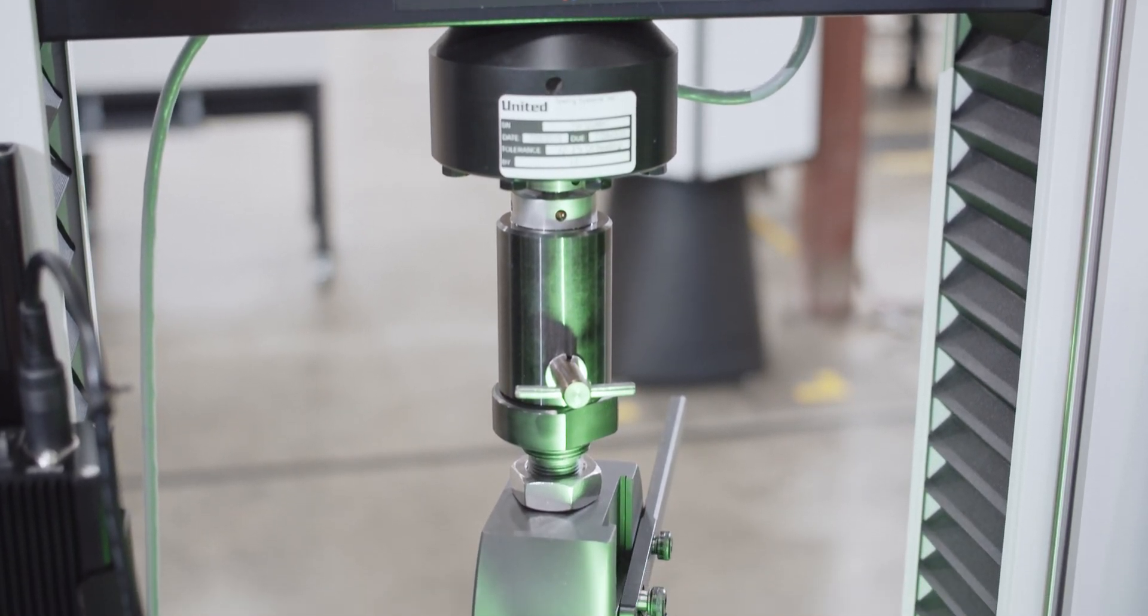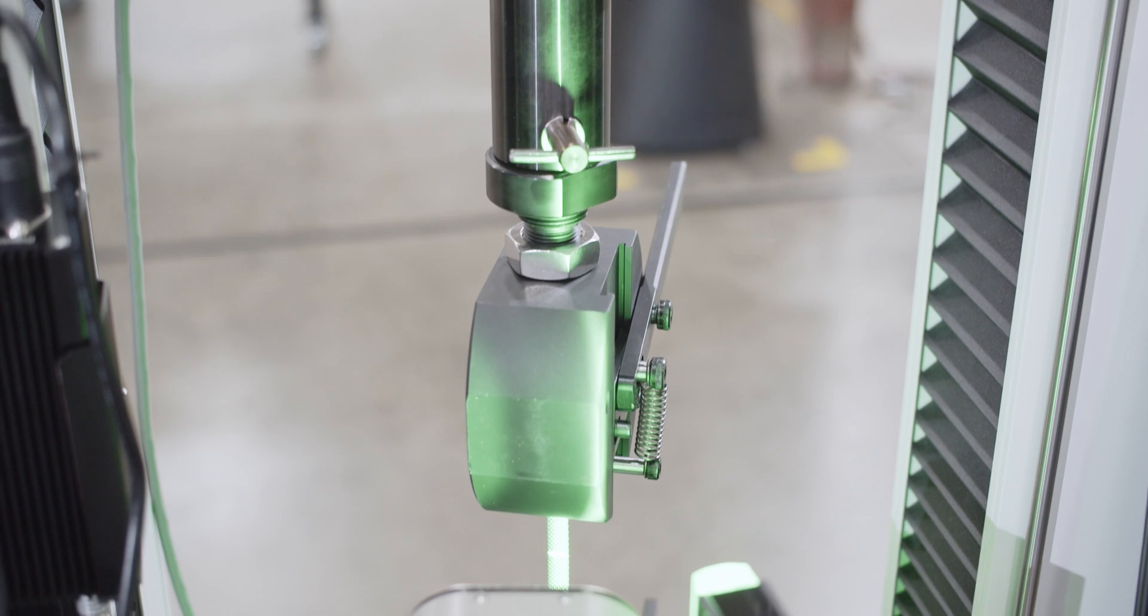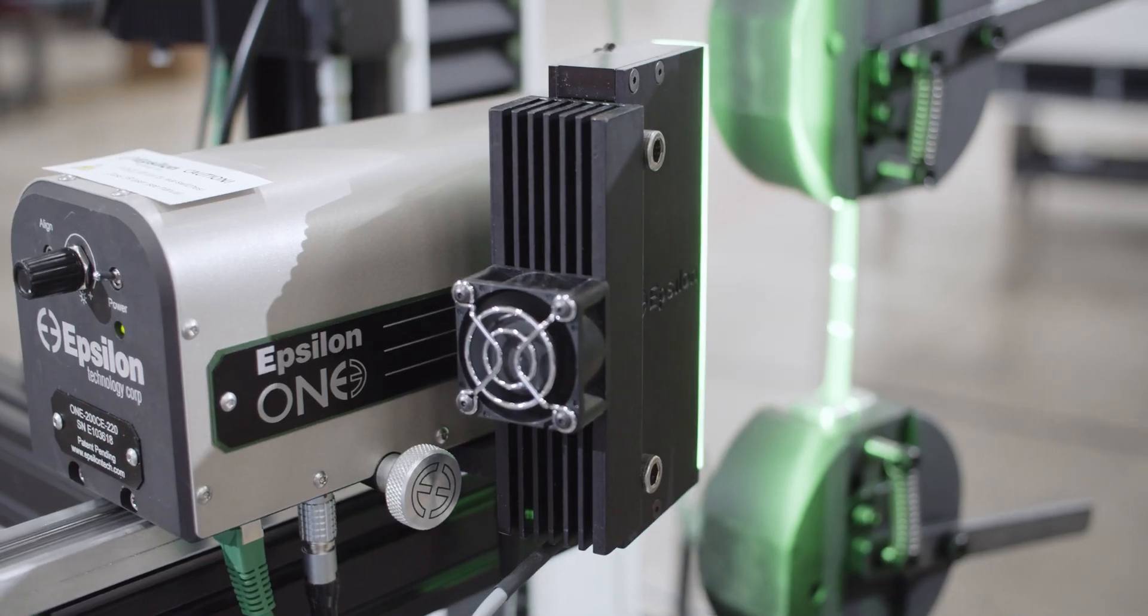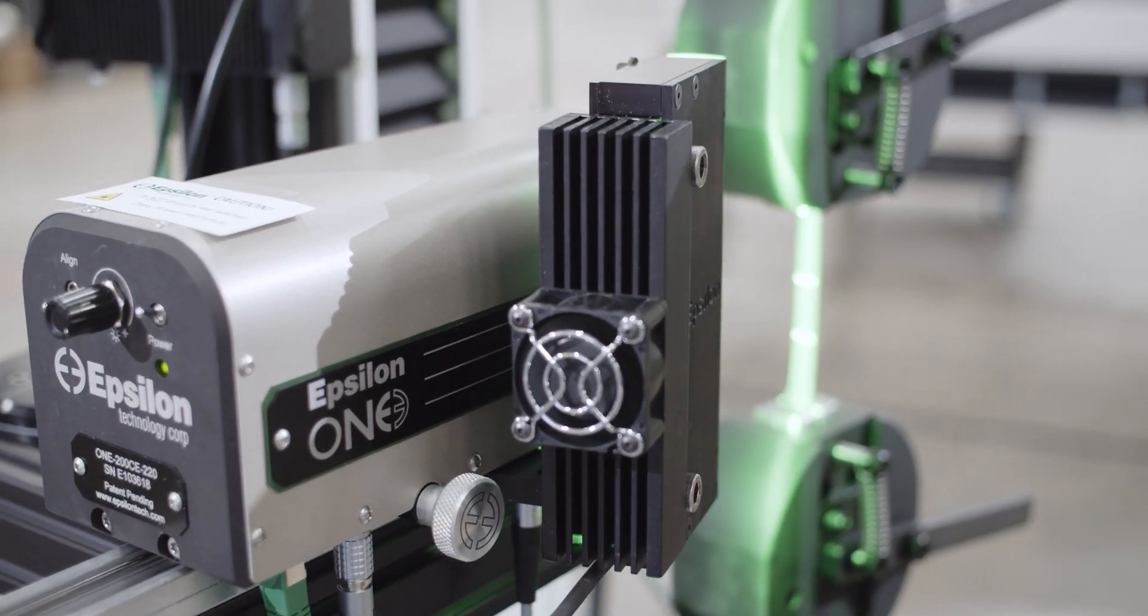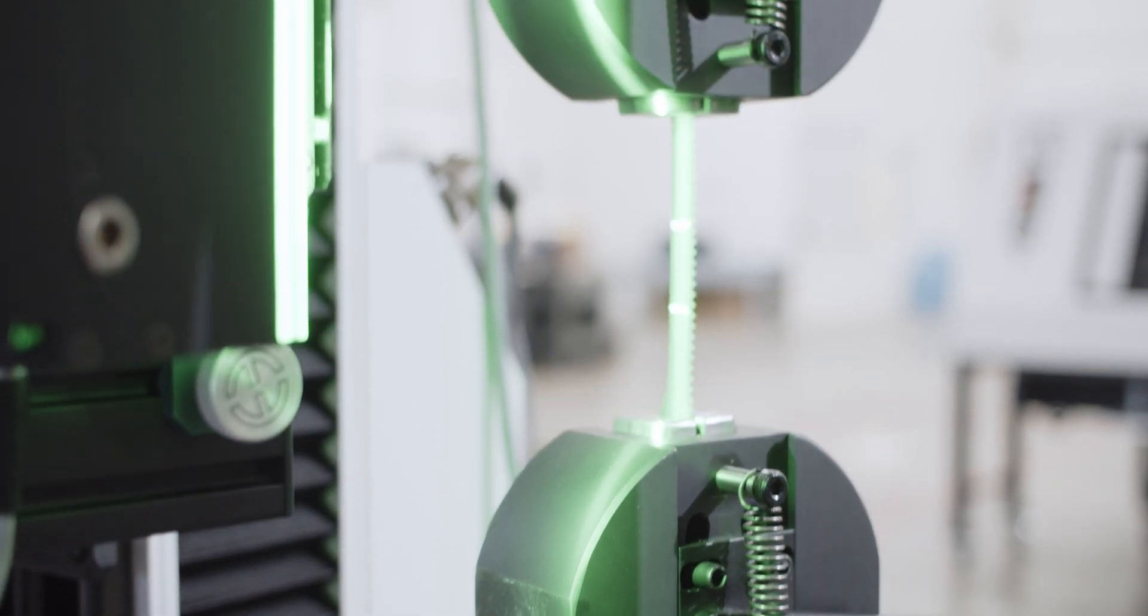A United universal test machine, along with the EP1, is ideal for testing a variety of materials. The system's high resolution makes it suitable for non-contact measurement of a wide range of strain values.